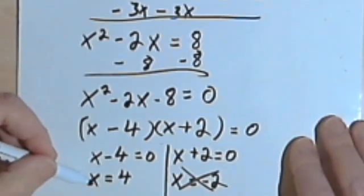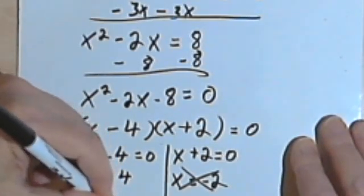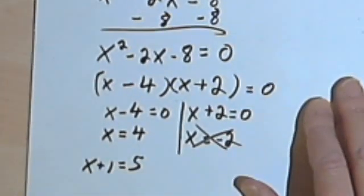So x equals 4, and that means that x plus 1 would equal 5. So my integers are 4 and 5.